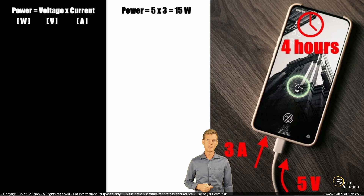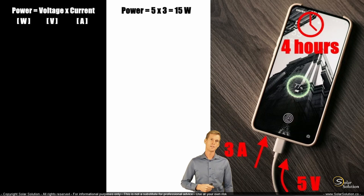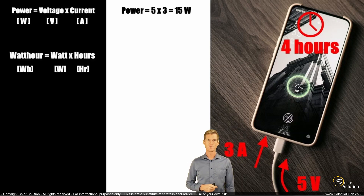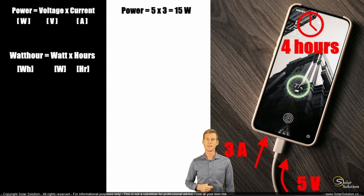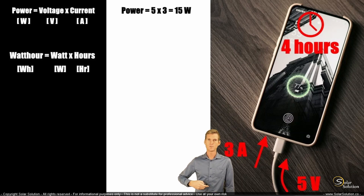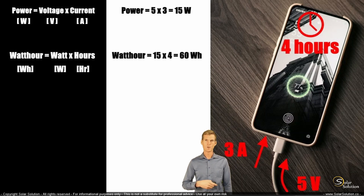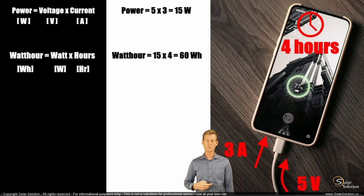Then we're going to calculate the watt hours that we are putting into your phone — putting into your battery. So the watt hours: you get the watt hours by multiplying the watts times the hours. We just calculated you are providing a power of 15 watts to the phone. You're doing it for four hours, and therefore you are supplying a total amount of electrical energy of 60 watt hours to your phone. So over the duration of four hours, you have supplied 60 watt hours of electrical energy to your phone, to your battery.